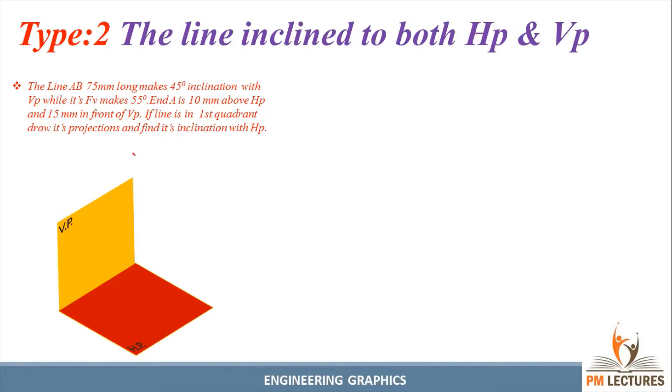This is the line and this is our starting point A and ending point B. The total distance of the line is 75mm. Point A is 10mm above HP. The front view projects on VP, so this is 10mm above HP, we can mark it as A.